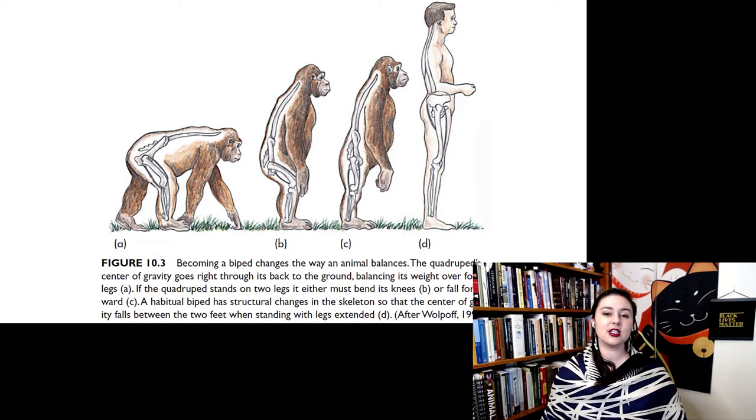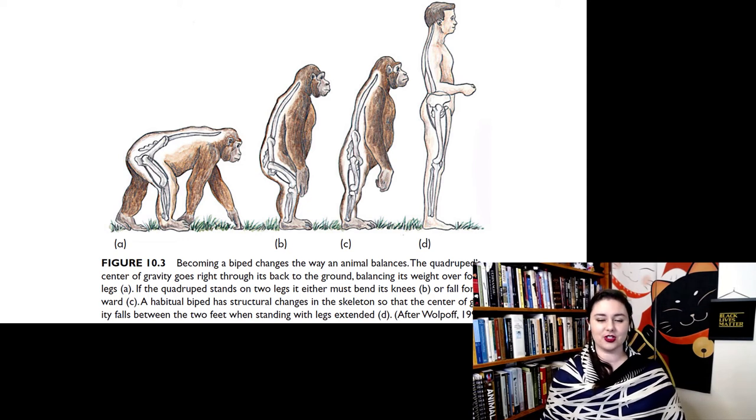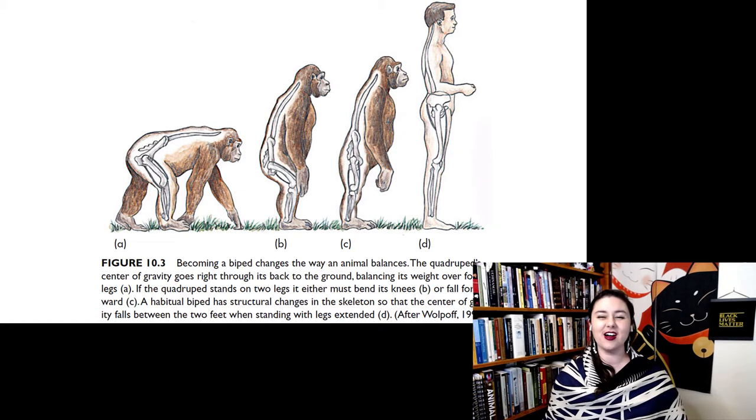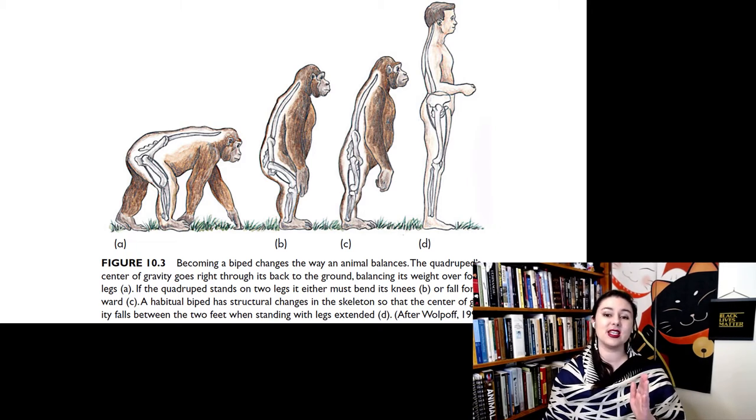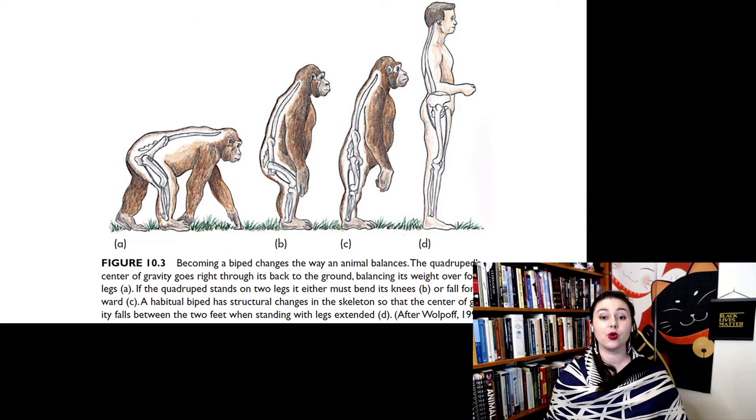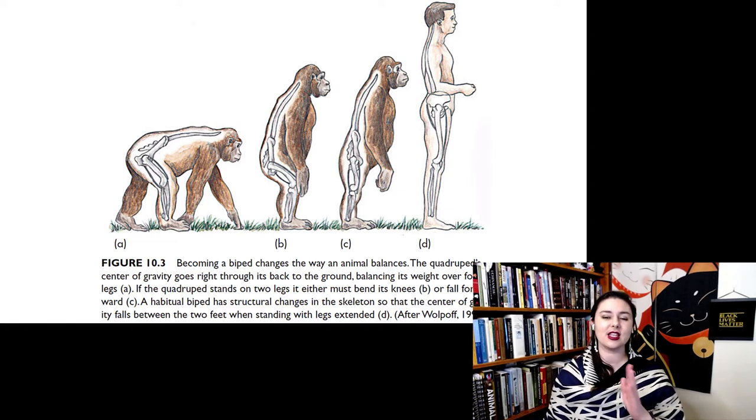Here we can look at the difference between a couple different postures in chimpanzees. So normally chimpanzees are, of course, on all fours. But when they do come up to just two legs, it's actually very difficult for them to extend both of their legs. You can see that actually it causes them to pitch forward and they are just not balanced. So when chimpanzees stand upright, they actually bend their knees and that brings their center of gravity back over their feet.